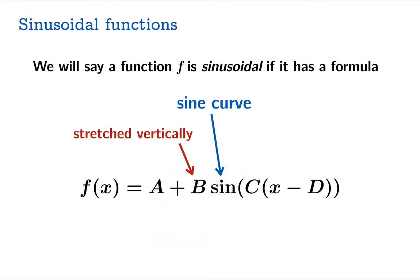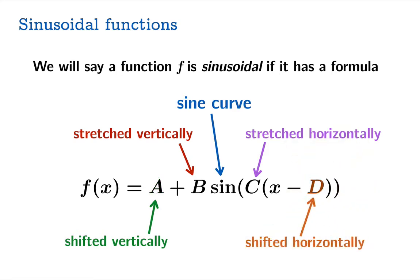What we're really doing here is taking the basic sine curve and stretching it vertically through the coefficient B, stretching it horizontally through the coefficient C. The coefficient A shifts the graph vertically, and the coefficient D shifts the graph horizontally.